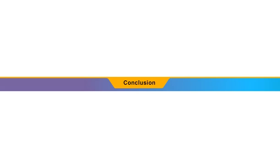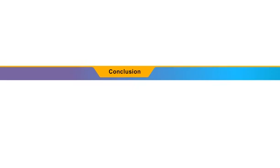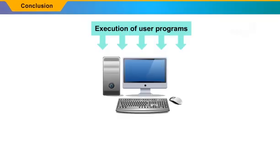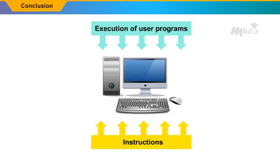Thus, from this lesson, we can conclude that the execution of user programs in Linux is the process by which a computer executes the instructions of a program by loading it into the memory, and execution is triggered by a call to the EXEC system call.